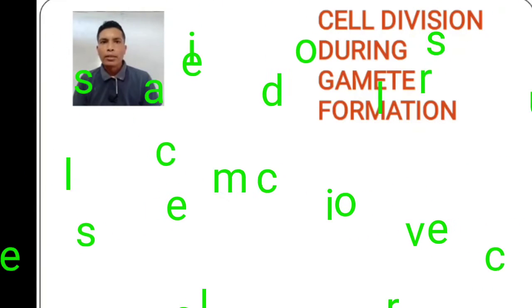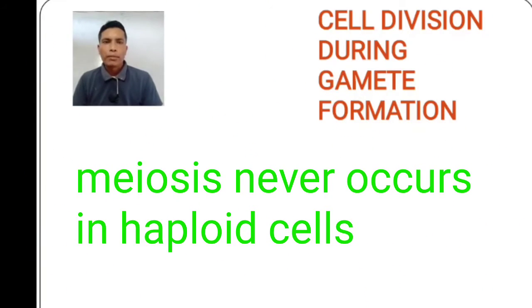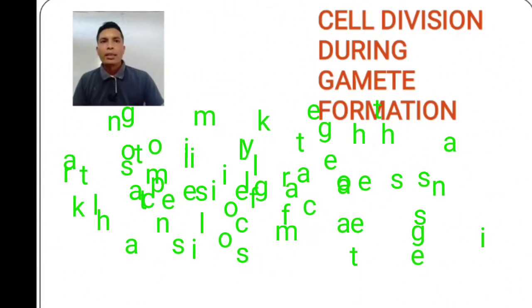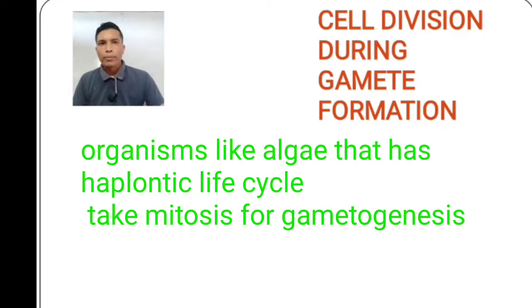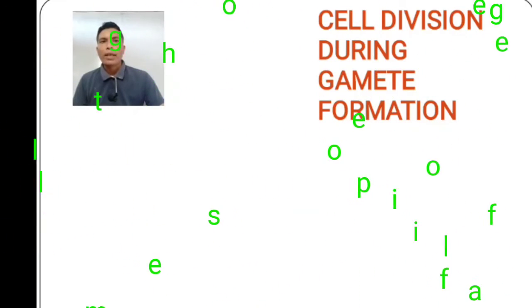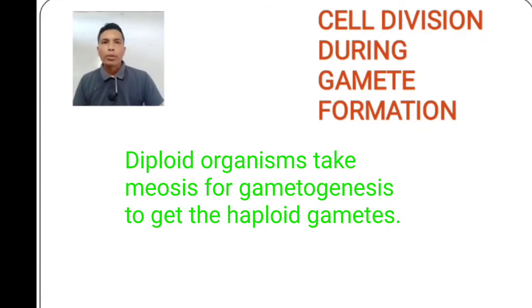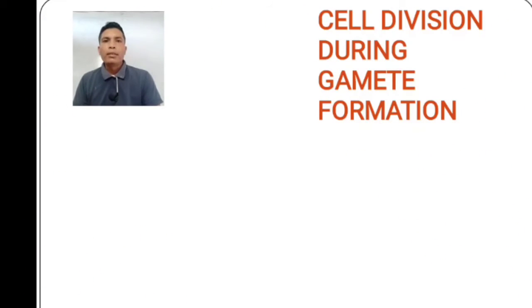Meiosis never occurs in haploid cells. Several organisms belonging to Monera, Fungi, Algae, and Bryophytes have a haploid plant body. But organisms belonging to Pteridophytes, Gymnosperms, Angiosperms, and most animals including human beings have a diploid parent body. So meiosis occurs in diploid organisms like human beings for gametogenesis, and mitosis occurs in plants like Bryophytes and Algae for gametogenesis.